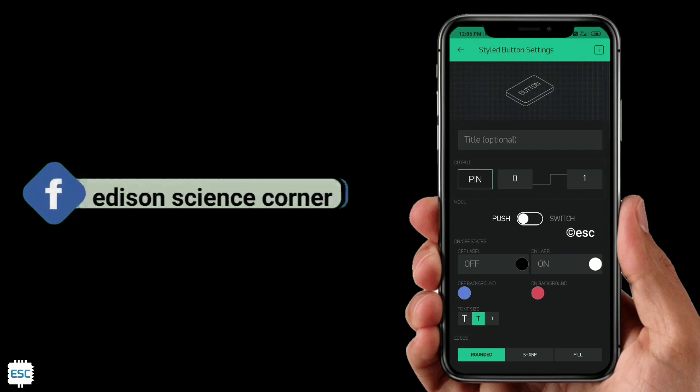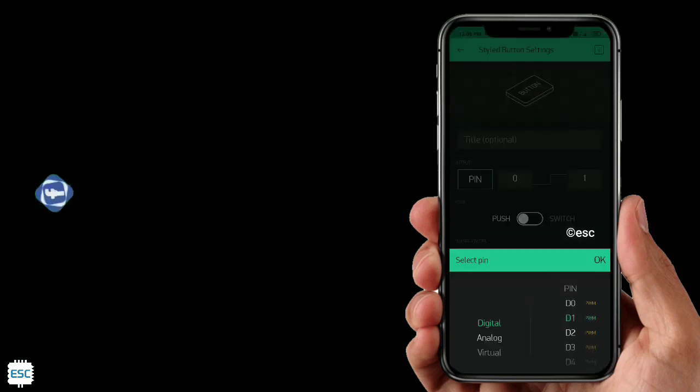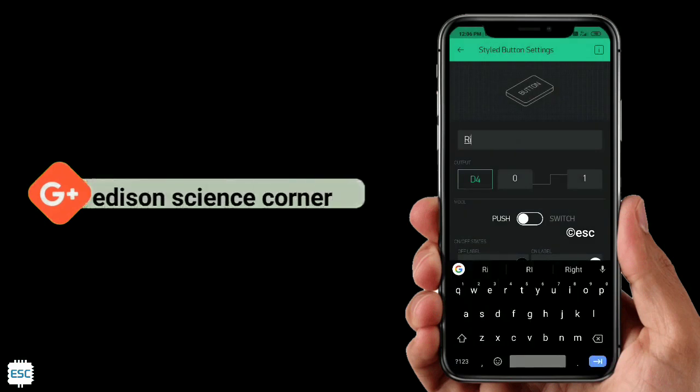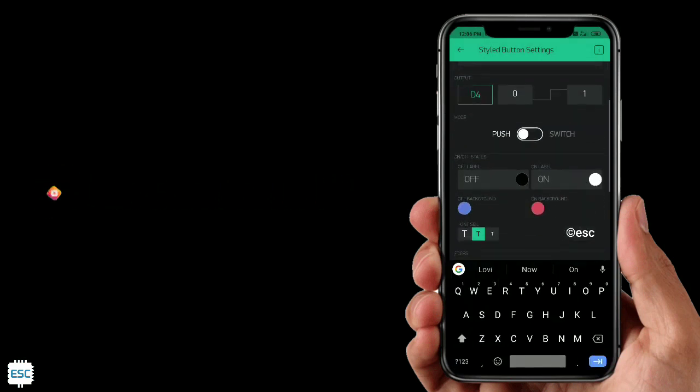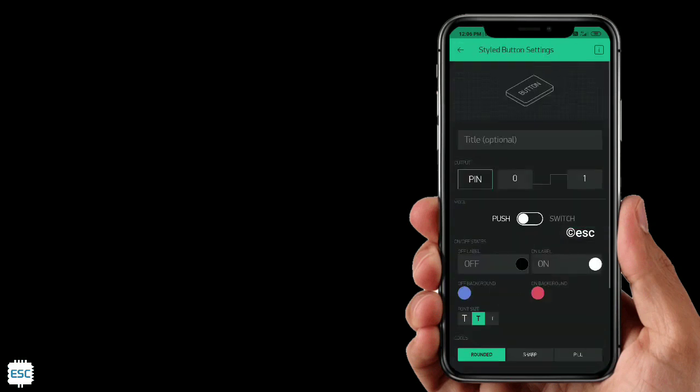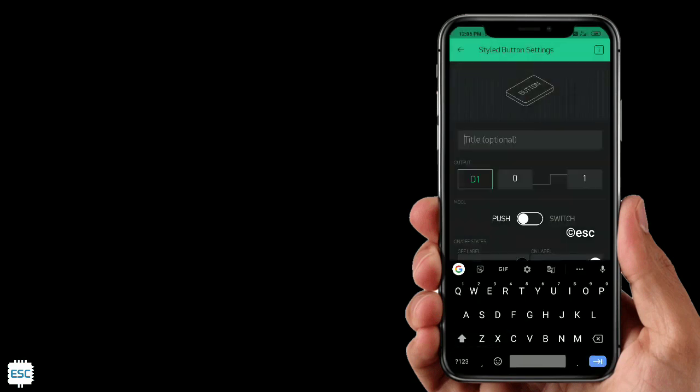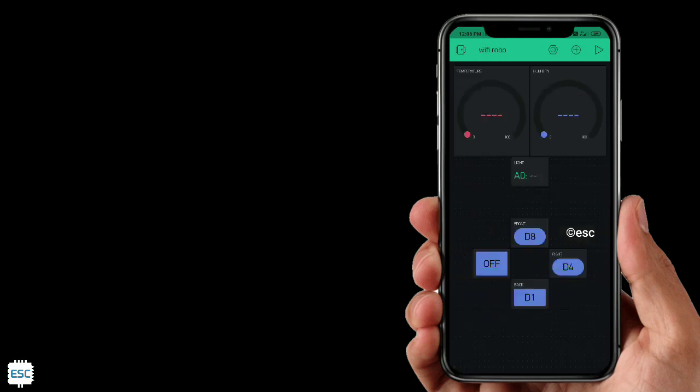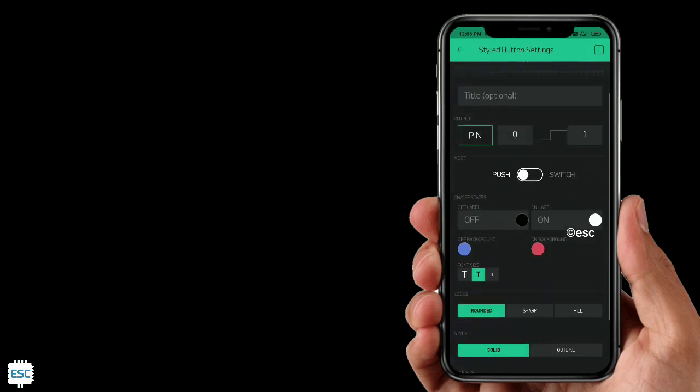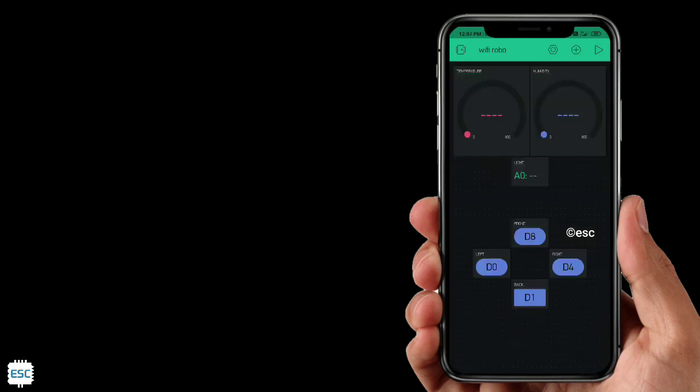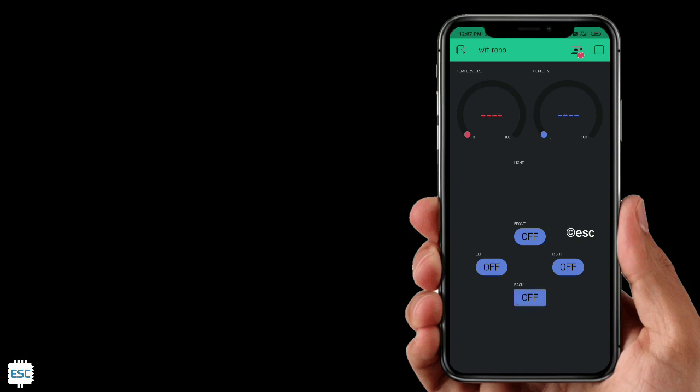Do the same for every button. For right, select D4. For back, select D1. And for left, select D0. That's all about the Blink app setup.